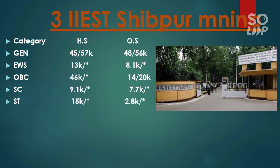For IIEST Shibpur Mining, the EWS cutoff is 8,100. For OBC, it is 14,000 and 20,000. For SC, it is 7,700. For ST, it is 2,800. You can also watch the video on percentile versus category rank — available via the 'i' button or in the description — to estimate your rank from your percentile.